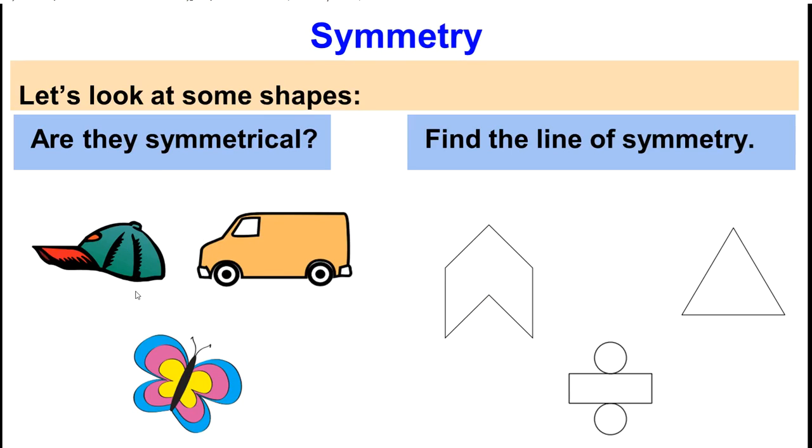Can I draw a line of symmetry somewhere on this hat and say that each half is identical? No, not for the hat. How about the van? Can I draw a line of symmetry and say that it is symmetrical? No.